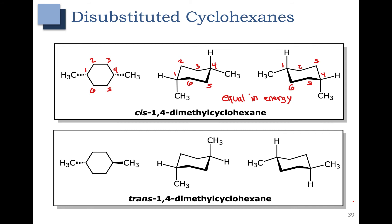Now let's look at trans-1,4-dimethylcyclohexane. In trans-1,4-dimethylcyclohexane the methyl groups are on opposite sides. At carbon 1 the methyl group is down — so in one chair conformation it's down and axial and in the other it's down and equatorial. At carbon 4 we have an up methyl group — in one conformation it's up and axial and in the other it is up and equatorial. Now we see a significant difference between these two chair conformations. The one on the left has two axial methyl groups, which makes this molecule highly strained because it will have lots of 1,3-diaxial interactions. The one on the right, however, has both groups in the equatorial positions, so this is the favored conformation or the conformation that is lower in energy.